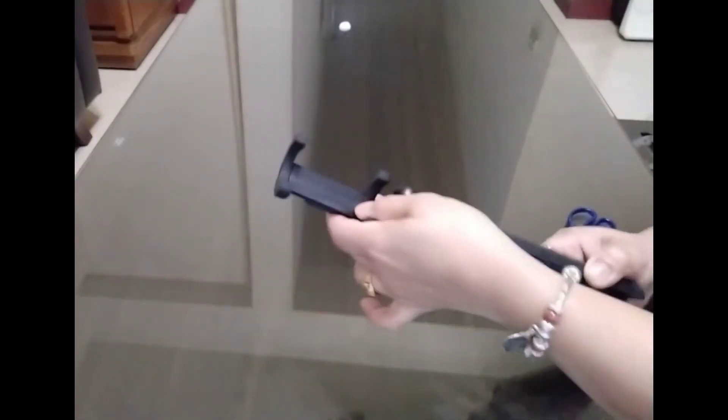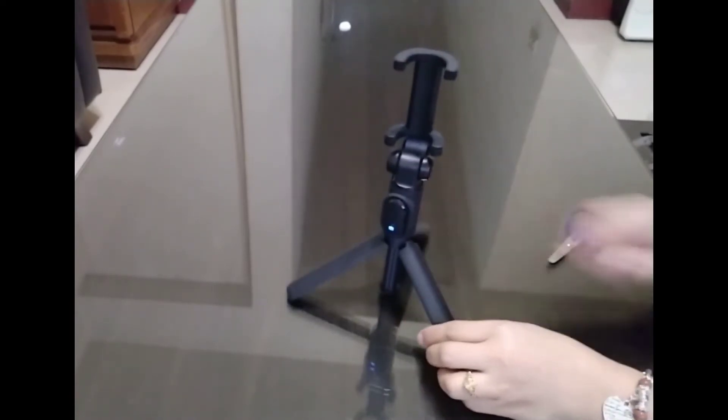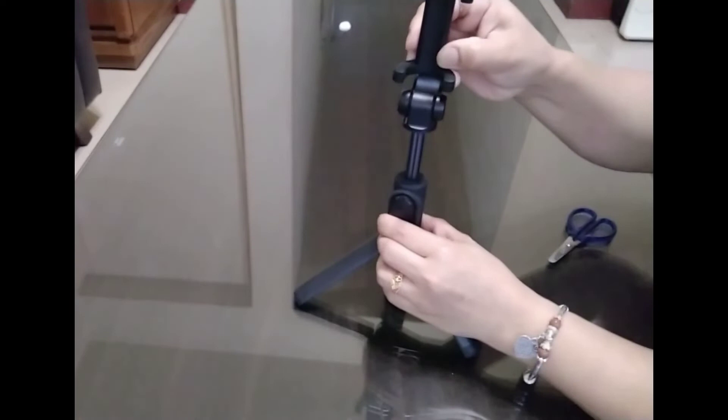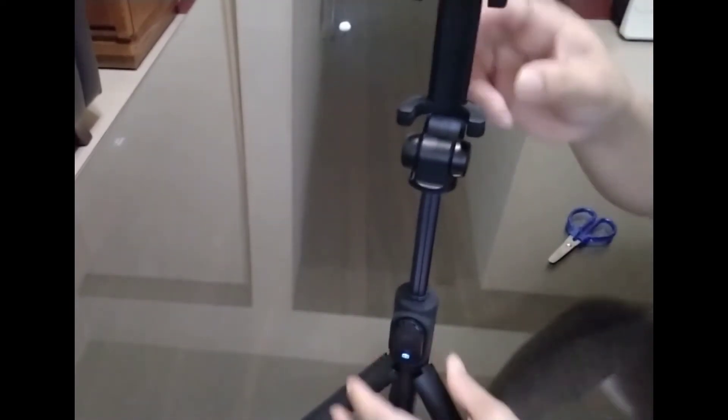Why 2-in-1? Because this can also be used as a selfie stick with the length of 42 centimeters, and it can also be used as mini tripod or tabletop tripod. The length can be expanded like this or depend on how you want it.